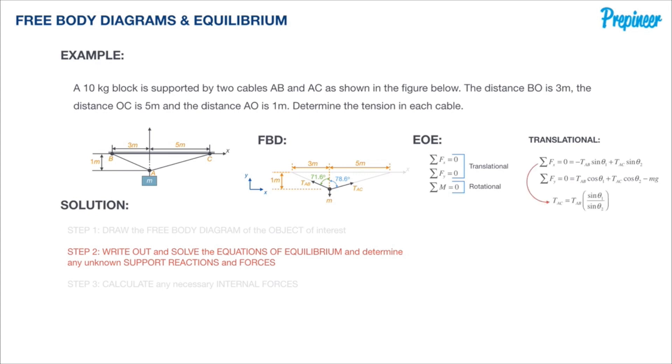What I want to do is take our first equation and isolate T_AC so I get a new formula, a new representation of what T_AC is equivalent to. Then I can take that and plug it into our second equation.